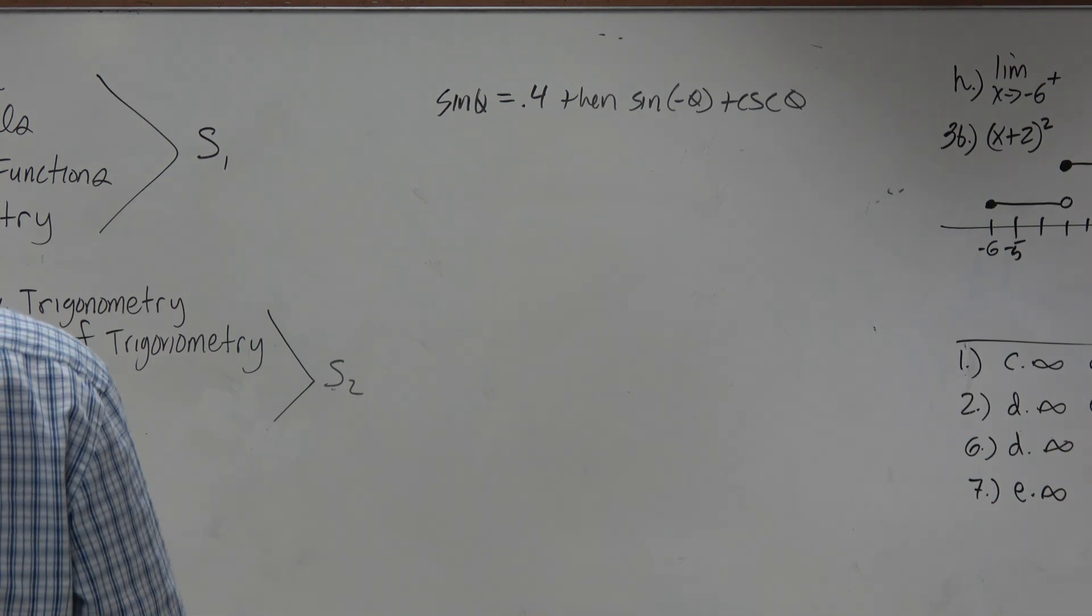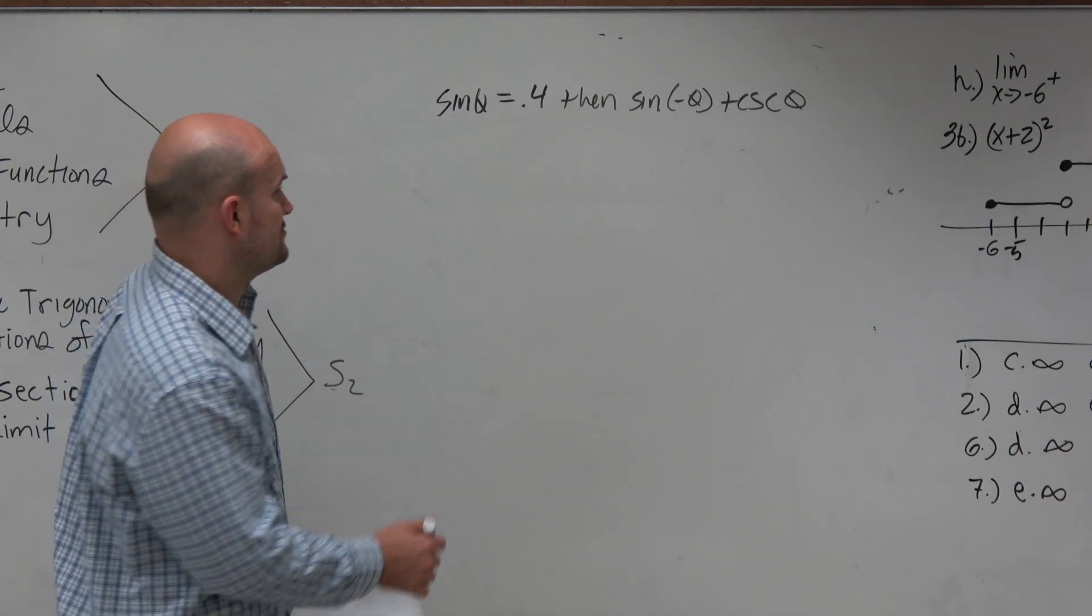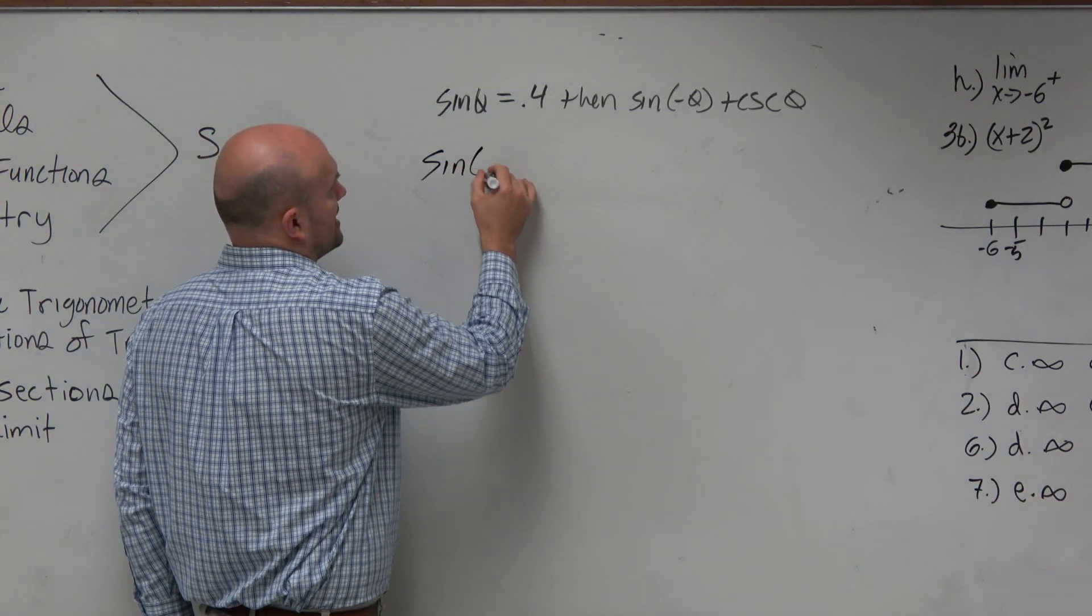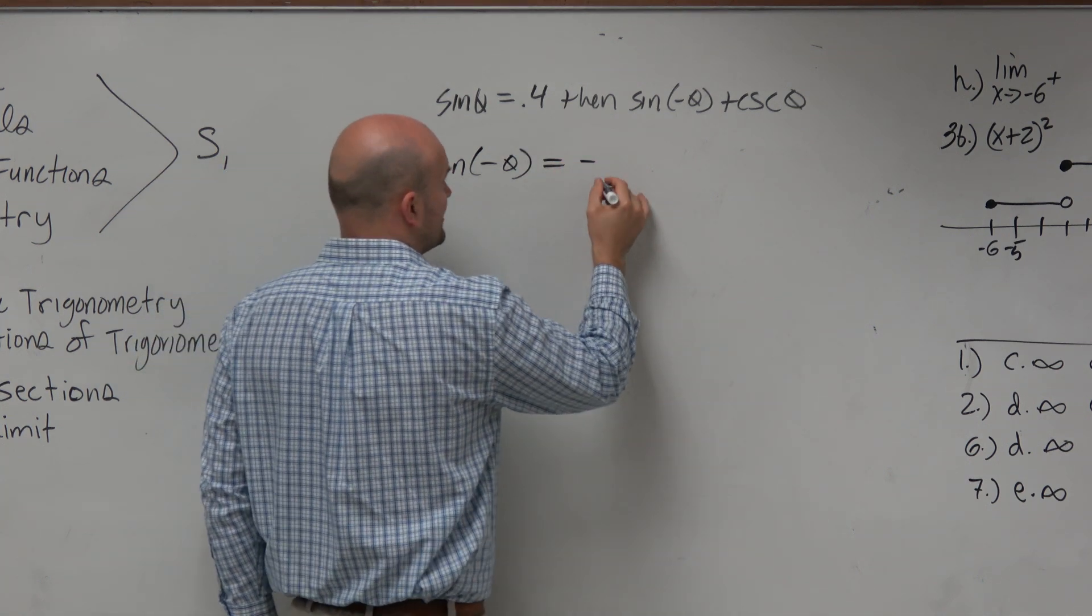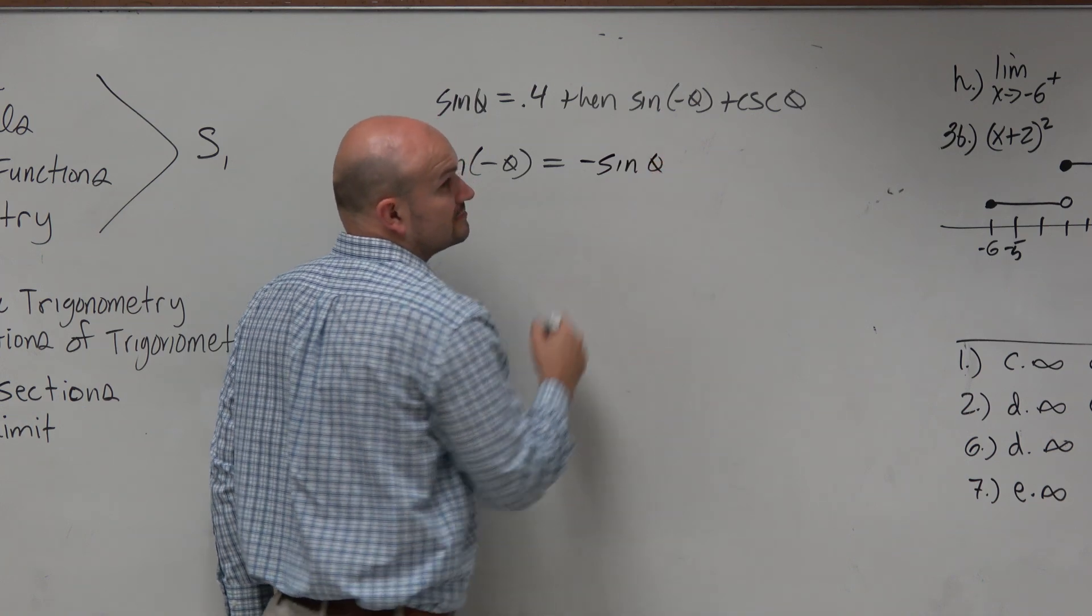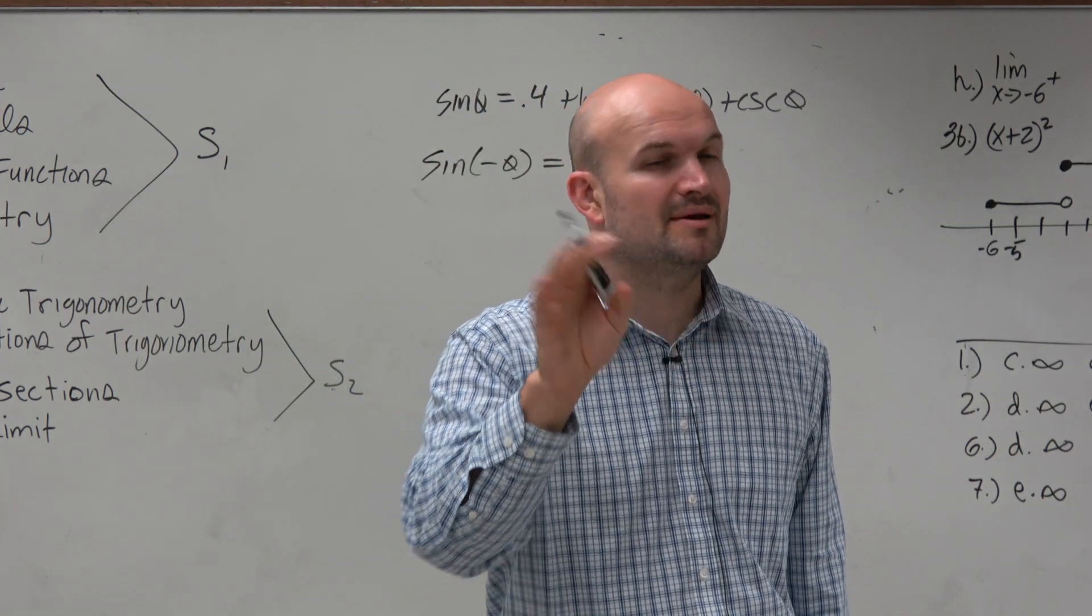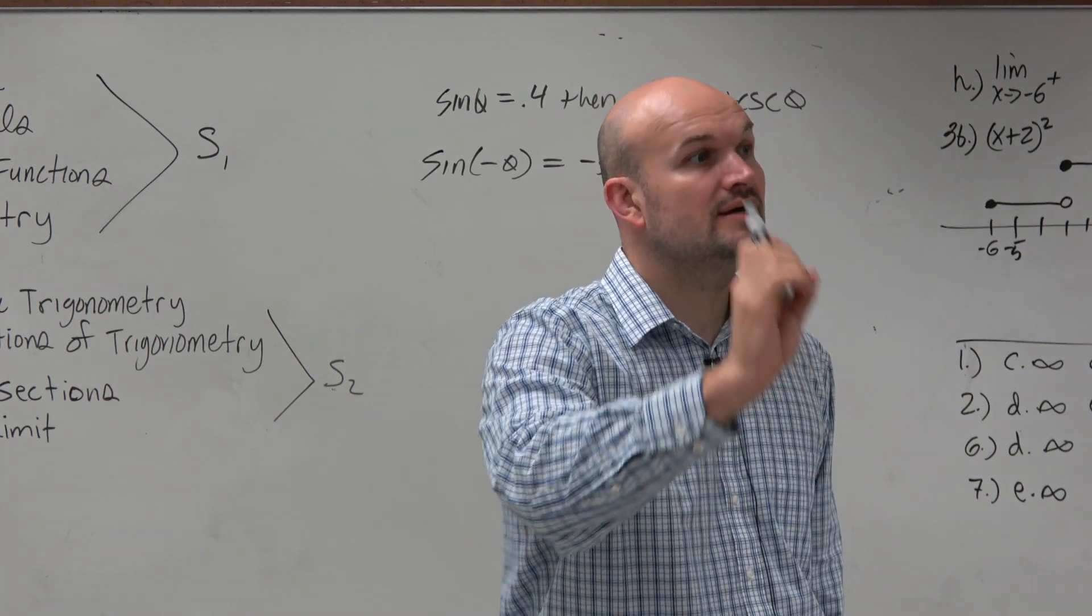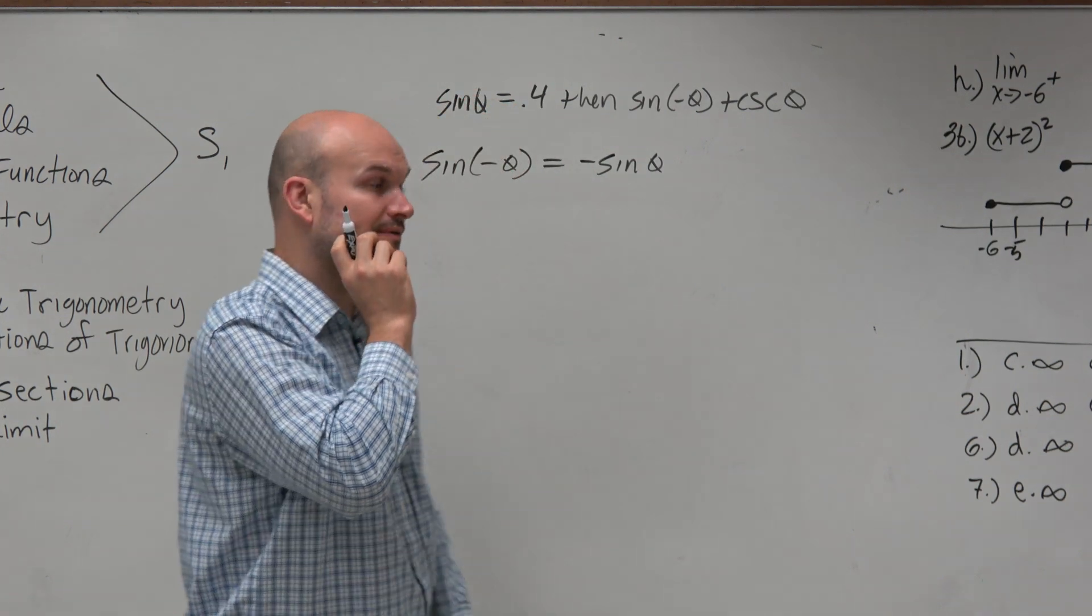All right. So first of all, if you guys remember that the sine of a negative theta is equal to the negative version of sine of theta, because sine is an odd function. The only time it was equal to exactly the same, it's not on your phone, it was in your notes, is the cosine and the secant function, because that's when it was even. Right?